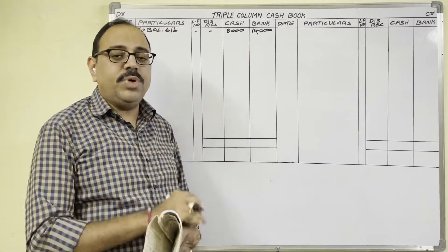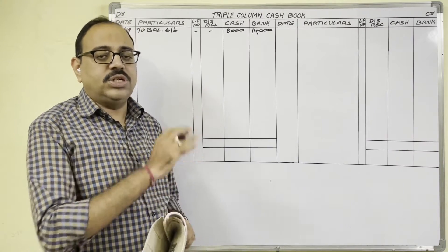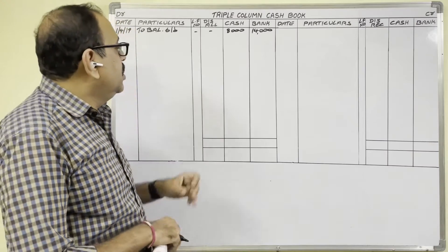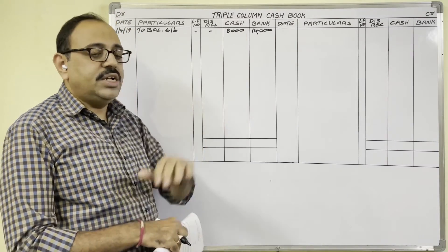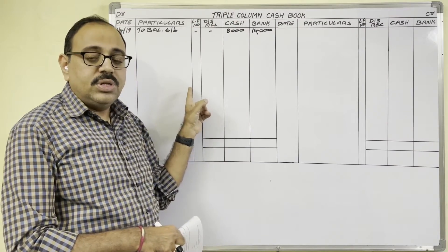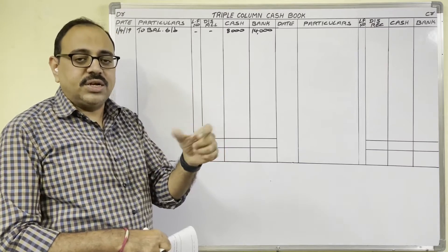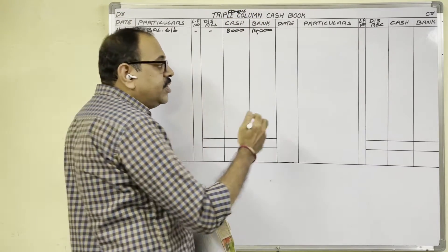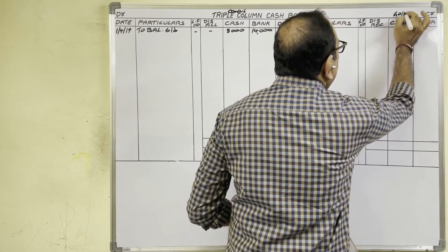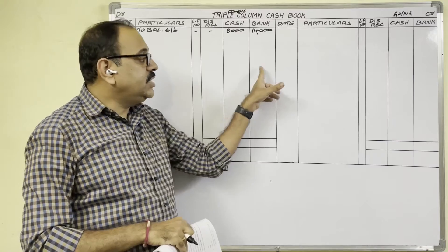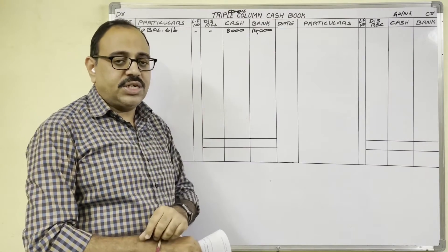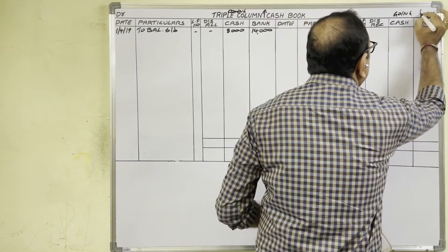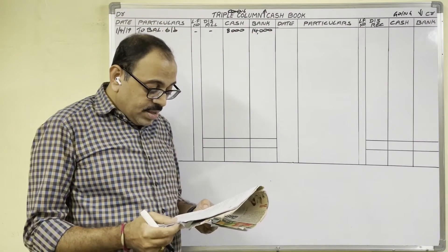To write transactions in a triple column cash book there are two methods: one is to think of the journal entry and post it, and the other is the shortcut method. In this video I'll explain the shortcut method. We have cash columns on both the debit side and credit side. From the firm's point of view, if cash is coming into the firm we write it in the debit side cash column; if cash is going out, we write it in the credit side cash column. Similarly, for bank columns: if bank balance is increasing, write in the debit side bank column; if bank balance is decreasing, write in the credit side bank column.